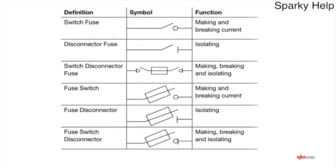We're probably all familiar with BS60947-3, which is the standard that the main switches or isolators we tend to find in there. This sets out the different types of switches that manufacturers can make. It used to be there were two different types of main switch — a switch fuse or a fuse switch, which we can see from the symbols here.